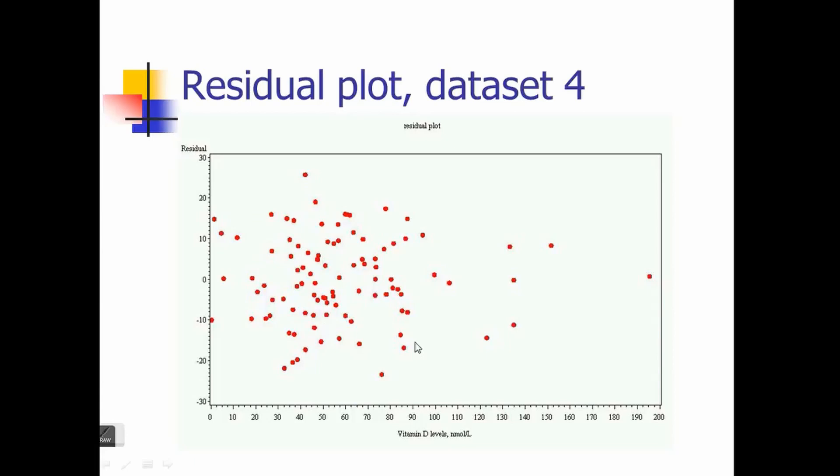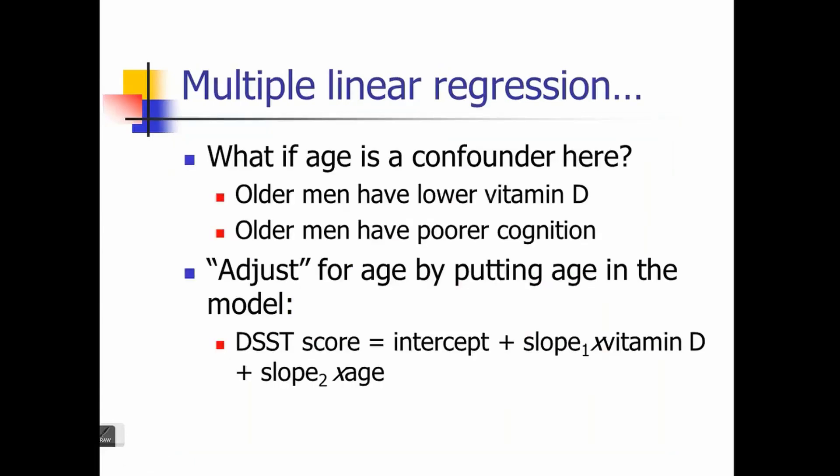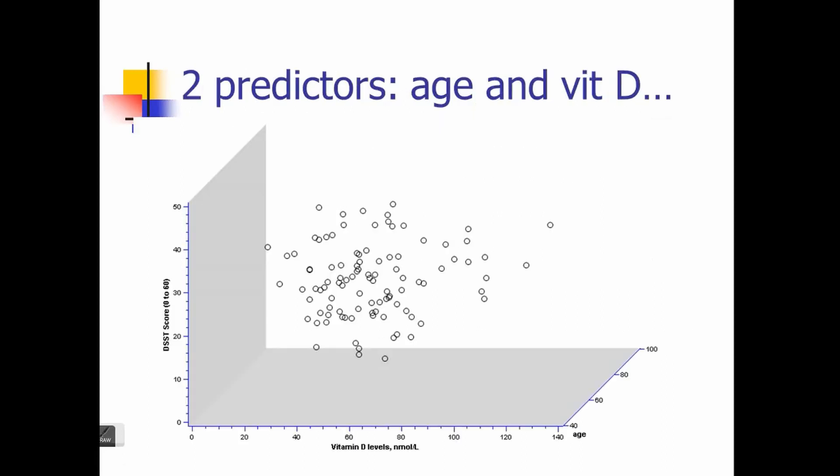Moving to multiple linear regression: if we use one independent variable, it's called simple linear regression. If you use more than one independent variable, then it is multiple linear regression. In this example, if you add age along with vitamin D, then it becomes multiple linear regression. Previously we used to fit a linear line; now we will have a linear plane because it's three dimensional—one dependent variable and two independent. Instead of a line, we will have a plane.